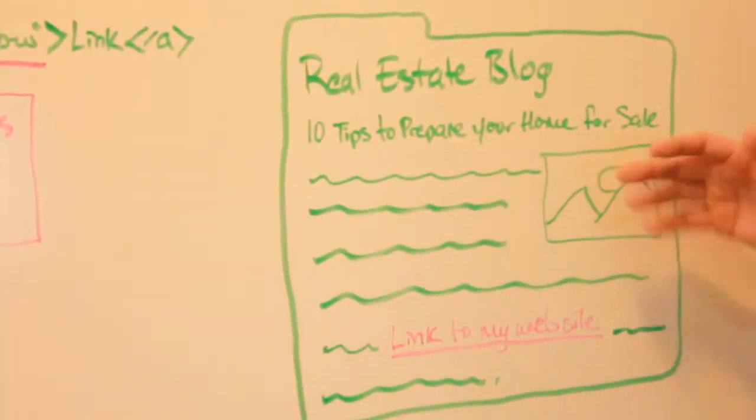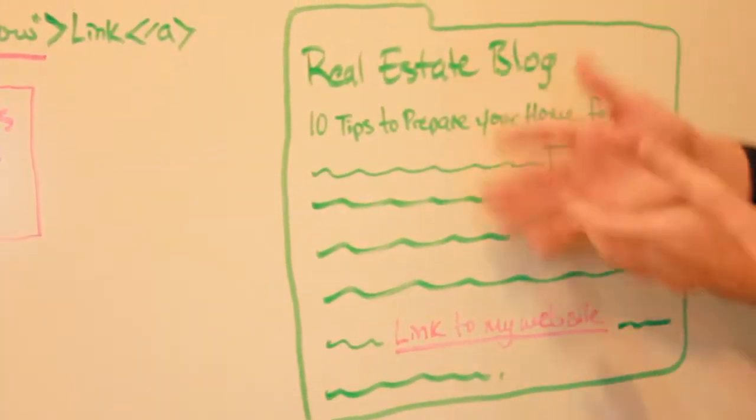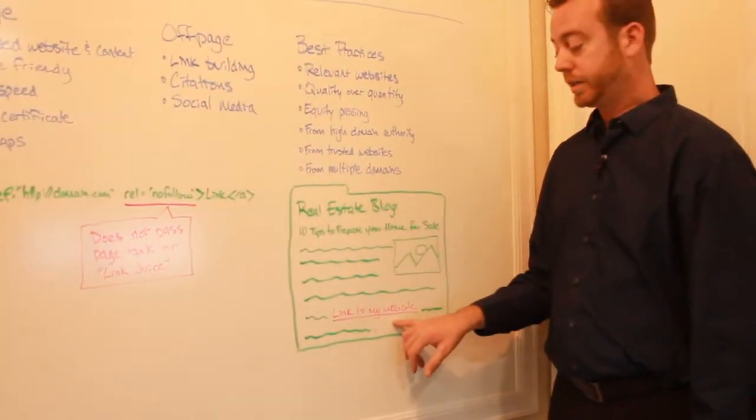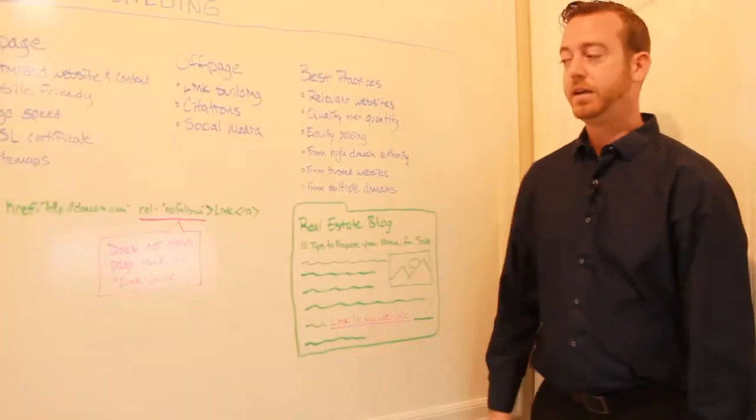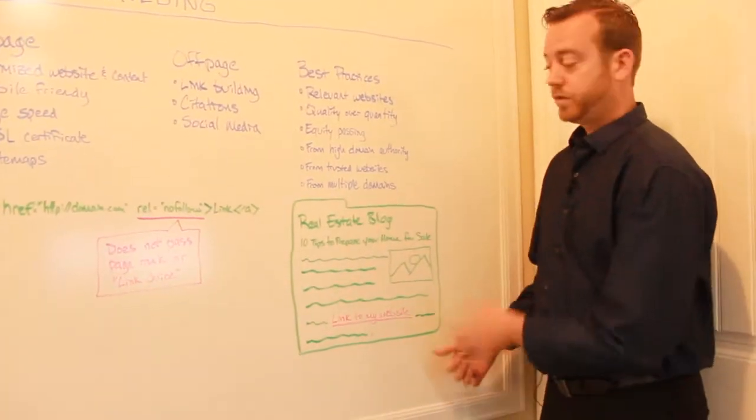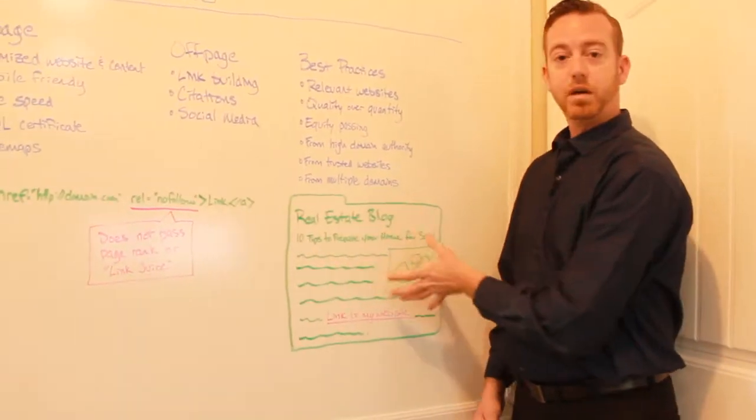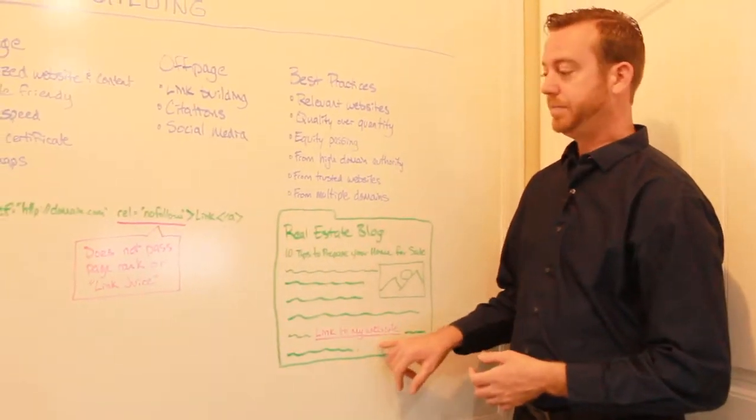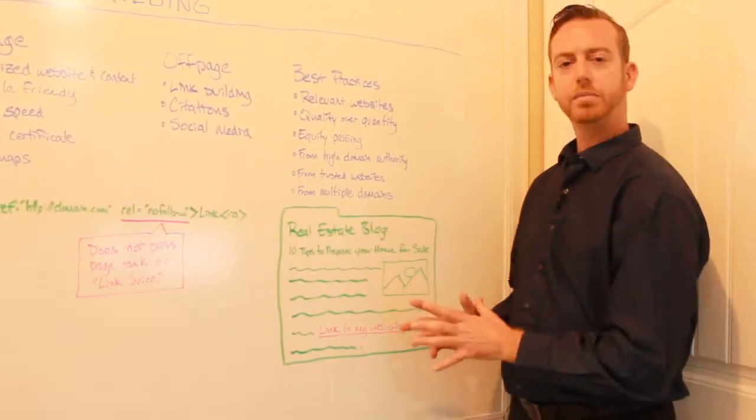It's 10 tips for preparing your home for sale. You write this content that they can have. You got an image and you slap a link inside that blog that links back to your website. And there's one link you've built from a relevant website. Hopefully this blog has a good authority, a trusted source. And that would be a really good link. And that's just one quick tip on how to build links.